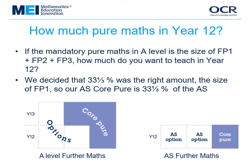MEI could have chosen more than one-third of the AS level to be compulsory pure content, but the reasoning is this: if the amount of pure maths in A-Level Further Maths is the same size as FP1 plus FP2 plus FP3, how much do you want to teach in Year 12? After discussing it with teachers, the answer was one-third — the same size as FP1. The diagrams show how you might sensibly divide up the A-Level core-pure between Year 12 and Year 13, and how that works if you want to take the AS level at the end of Year 12.